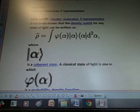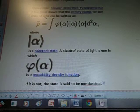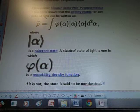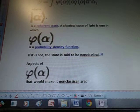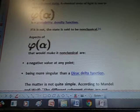Where another strange looking thing is a coherent state. A classical state of light is one in which those two symbols together is a probability density function. If it is not, the state is said to be non-classical.